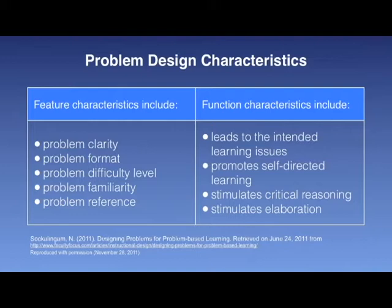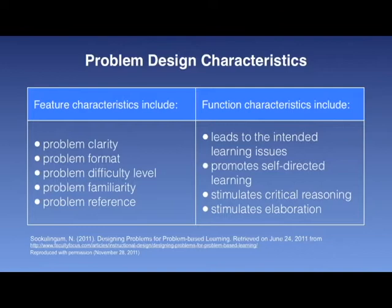These characteristics are organized into two categories: Feature Design Element Characteristics and Function Desired Outcome Characteristics, and these are given on the slide in front of you. The feature characteristics include Problem Clarity, Problem Format, Problem Difficulty Level, Problem Familiarity, and Problem Relevance. The function characteristics include: leads to the intended learning issues, promotes self-directed learning, stimulates critical reasoning, stimulates elaboration, promotes teamwork, and triggers interest. This is taken from Socklingham 2011, Designing Problems for Problem-Based Learning.